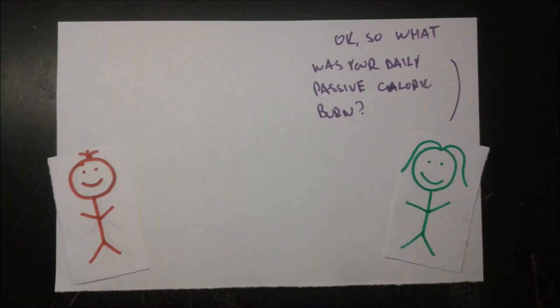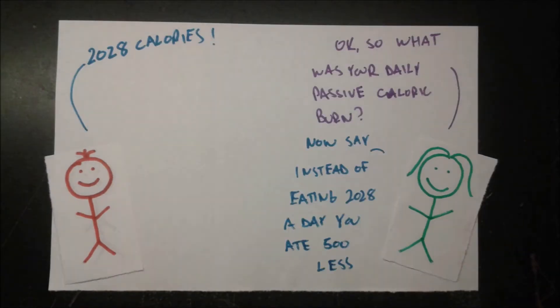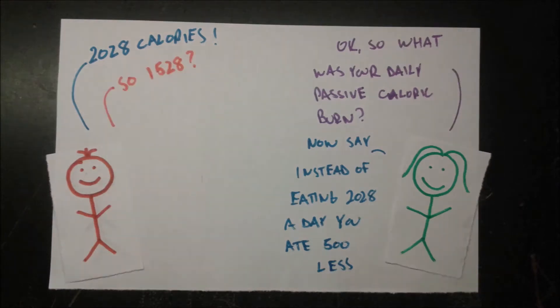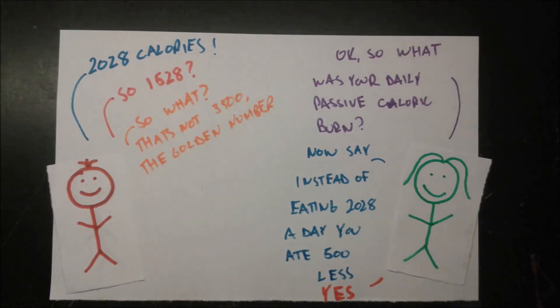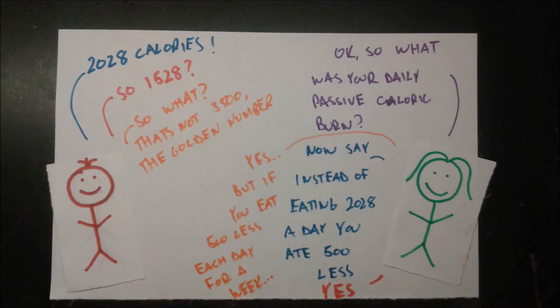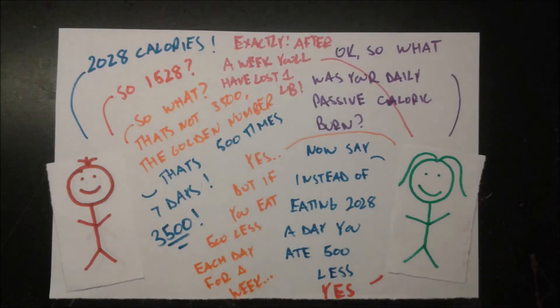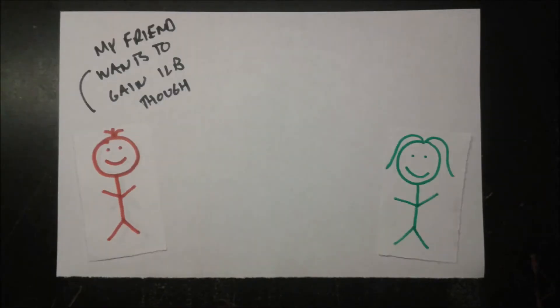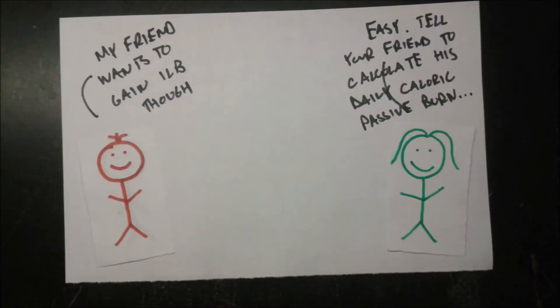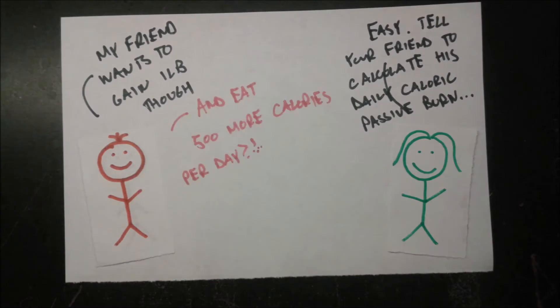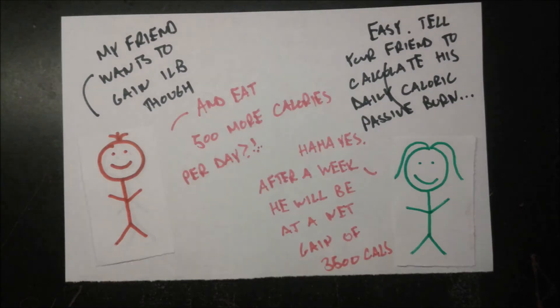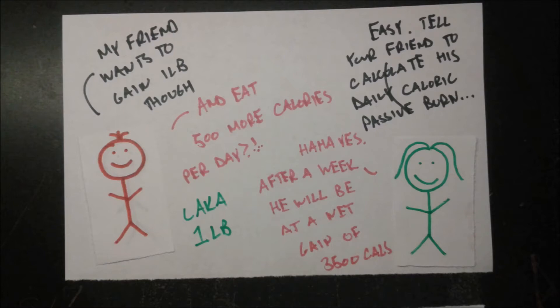His daily caloric passive burn is 2,028. If he eats 500 fewer calories every day for a week, that's negative 500 times 7, or negative 3,500 calories — meaning he loses one pound in a week. For the opposite, if you want to gain a pound a week, add 500 to your daily caloric passive burn, gaining 500 calories a day for 3,500 per week.